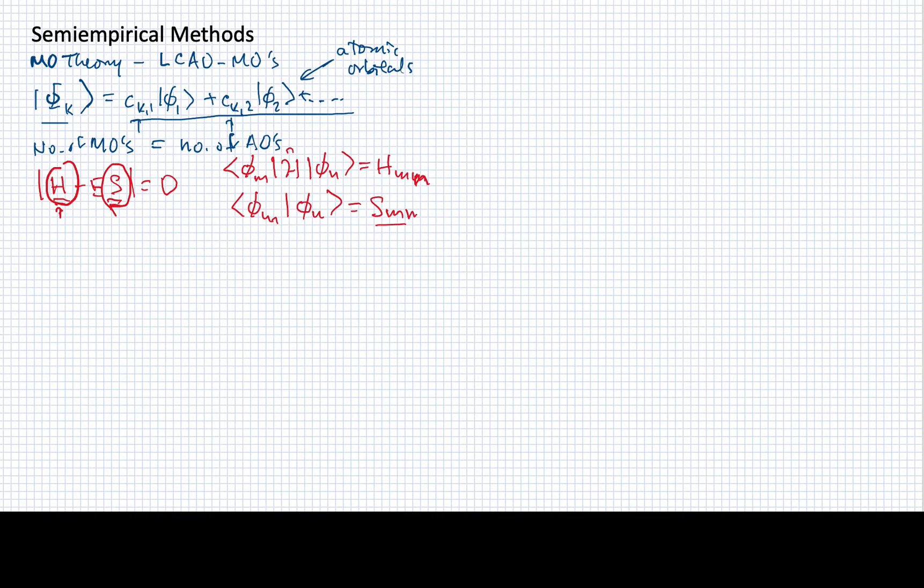These are both square matrices that span this set of atomic orbitals. When I solve this equation, I am solving for the energy levels of all the molecular orbitals that are involved, and the coefficients CKJ. I'm solving for these to describe those orbitals.